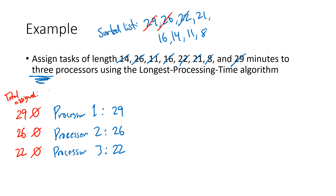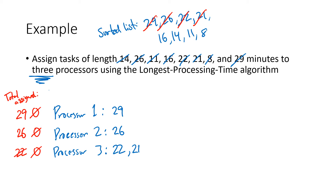Next is a task of length 21. Processor three has the least time assigned at 22, so the 21 goes to processor three. Its running total becomes 22 + 21 = 43. Next is 16. Processor two only has 26 assigned, the lowest, so the 16 goes to processor two. Its total is now 26 + 16 = 42.